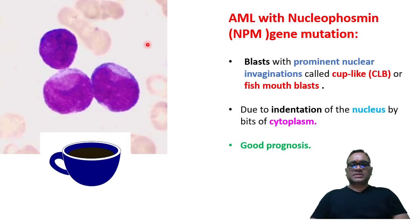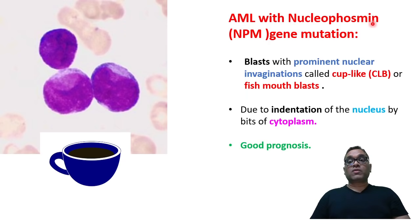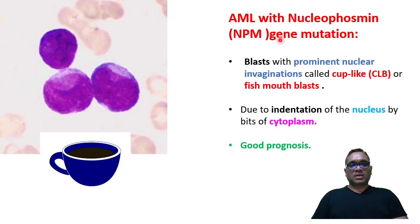Hello everyone. In this enlightening shot, I am going to tell you about AML with one of the specific mutations called nucleophosmin gene mutation. In short, we call them NPM1.